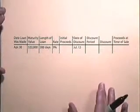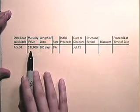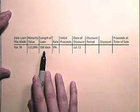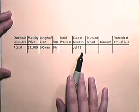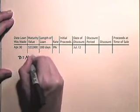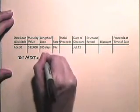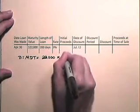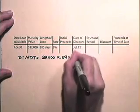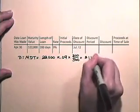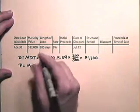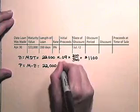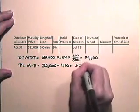Now let's find the proceeds when discounting a simple discount note. This note was made on April 30th with a maturity value of $22,000, a length of 200 days, and a rate of 9%. The bank discount is $22,000 times 9% times 200 over 360, which equals $1,100. So the proceeds are $22,000 minus $1,100, which is $20,900.